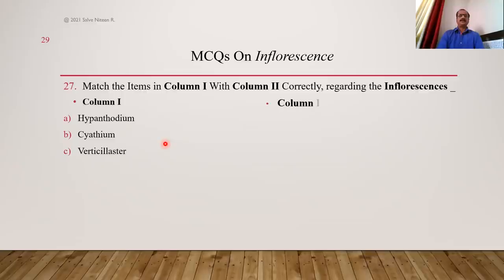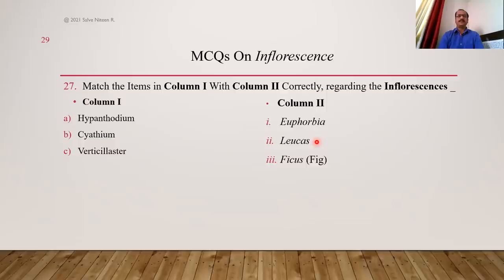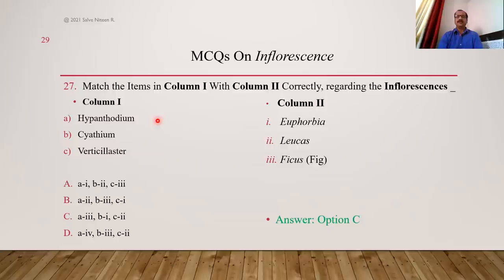Matching question — names and examples given. Euphorbia pulcherrima shows Cyathium inflorescence; Lucas and holy basil (Ocimum) show Verticillaster inflorescence, as they are members of family Lamiaceae; Ficus (fig) shows Hypanthodium type of inflorescence. After matching, the right answer is option C.